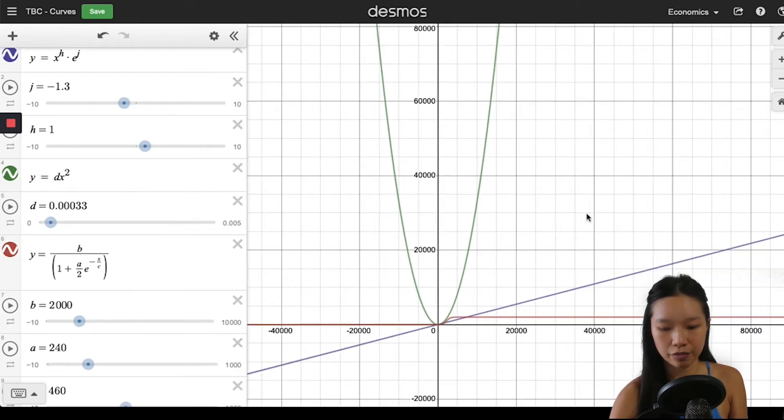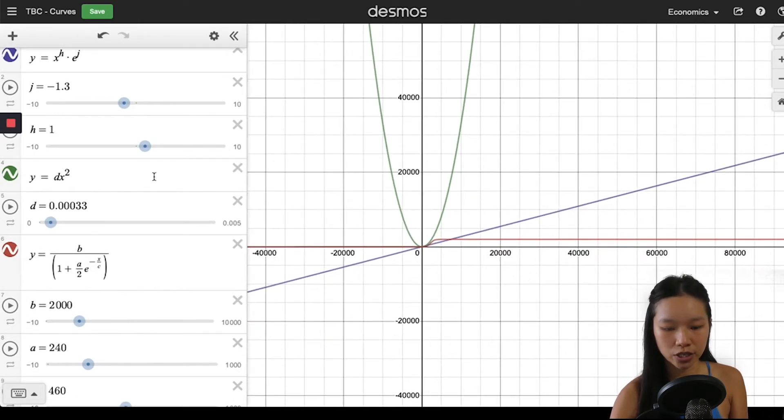Okay, now let's look at the curve function. The curve function is a simple y equals dx squared, so it gives you a very nice curve like that. You can have x cubed, x to the power of 4 - it changes the shape of the curve. The shape is really dependent on what you want to achieve in your project.